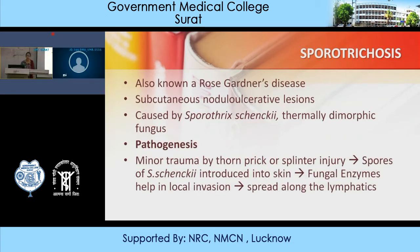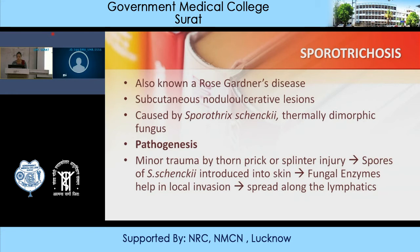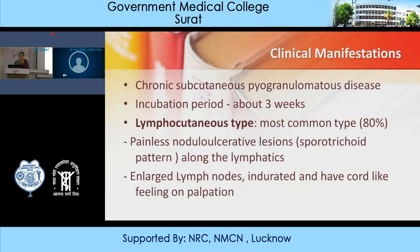Another subcutaneous mycosis is sporotrichosis, also known as rose gardener's disease. These are subcutaneous nodulo-ulcerative lesions caused by Sporothrix schenckii, a thermally dimorphic fungus growing at 24°C and 37°C. Pathogenesis: minor trauma in gardeners from a thorn prick or splinter injury introduces spores into the skin. They liberate fungal enzymes leading to local invasion, then invade the lymphatics and spread along lymphatic channels, causing chronic subcutaneous pyogranulomatous disease. Incubation period is about three weeks.